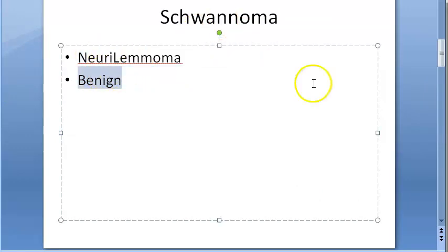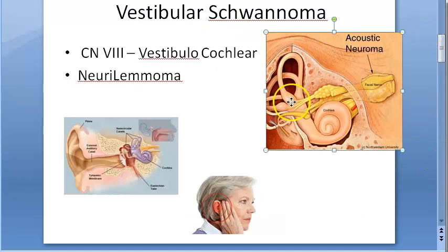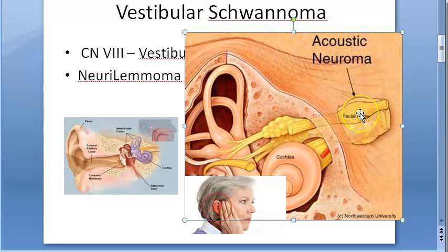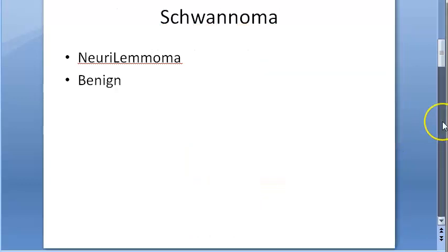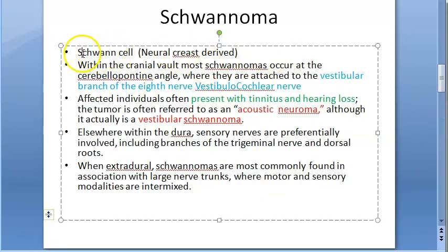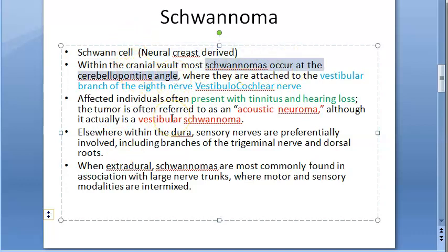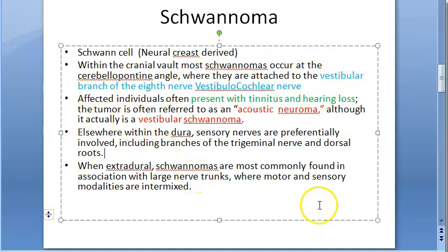It is a benign condition only, but it is very close to the facial nerve. The Schwann cell, which forms the nerve sheath, is a neural crest-derived cell. Schwannomas occur at the cerebellopontine angle, and they are attached specifically to the vestibular branch of the eighth cranial nerve, that is, the vestibulocochlear nerve.